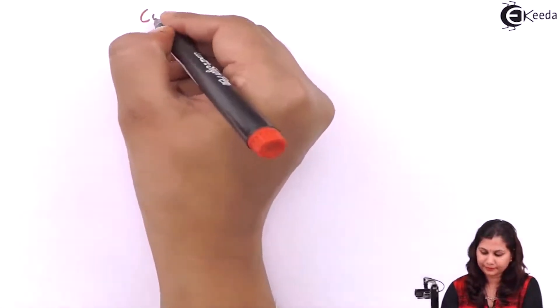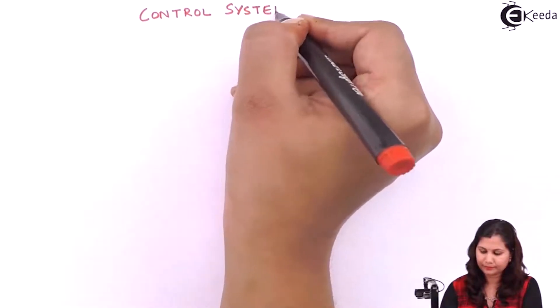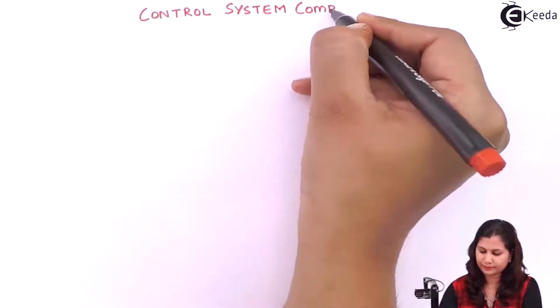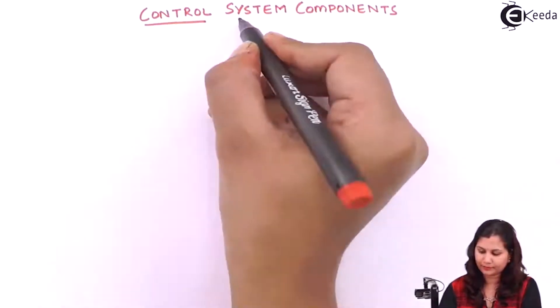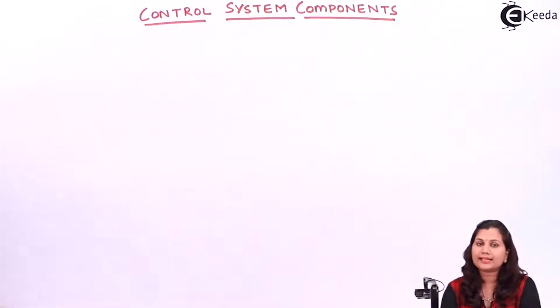Hello friends, in this video we are going to study about the control system components. Before starting with the control system components, let us consider a block diagram of a closed-loop control system.